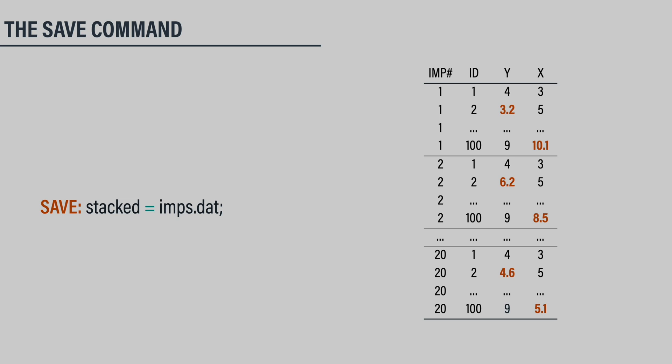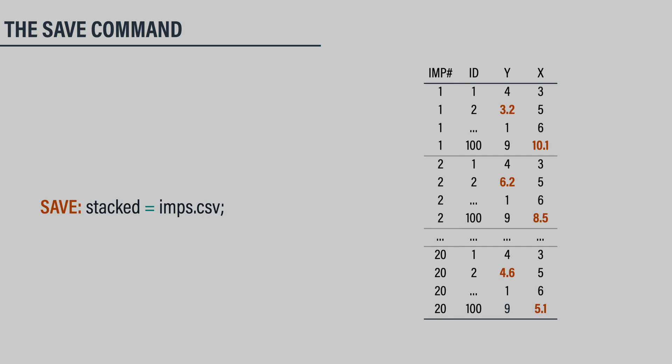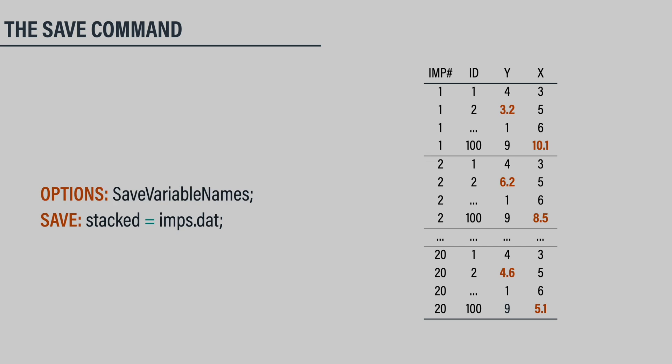The final thing we need to do is specify the format of the filled-in datasets. Blimp can stack all the imputed datasets into a single long format file, or save them to separate files with unique file names. These options cover virtually all major software platforms. Additionally, datasets can be saved as space delimited or comma delimited with or without variable names as column headers. The save command specifies the format and file name for the imputed data. The stacked format appends the 20 datasets to the same file, which I name imps.dat. Blimp adds an additional variable in the first column that indexes the 20 datasets. To save as a comma delimited file, you simply change the file extension to .csv. If you want variable names saved to the first row of the imputed data file, you can use the save variable names keyword on the options command.